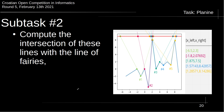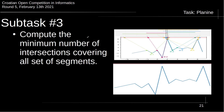Subtask number two is to compute the intersection of these lines with the line of ferries. Subtask number three is to compute the minimum number of intersections covering all the set of segments. As you see in the picture, we compute the intersection and get a segment of the line where we can place any ferry to eliminate all paths — so we need just one ferry to eliminate all paths here.